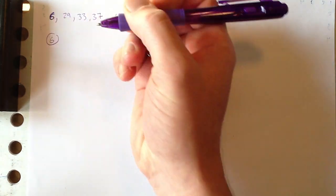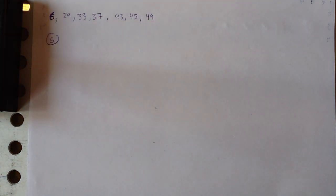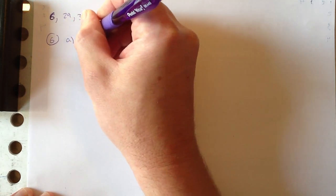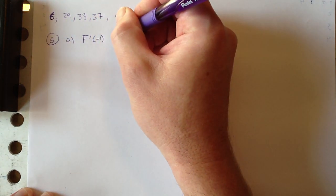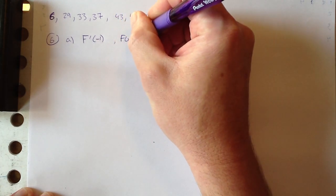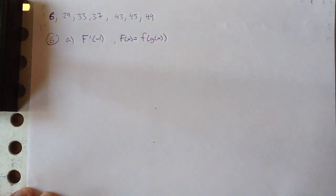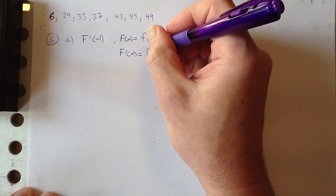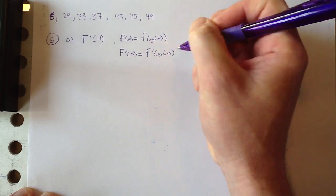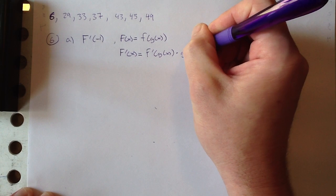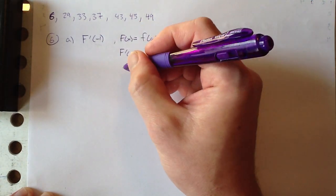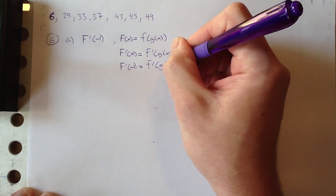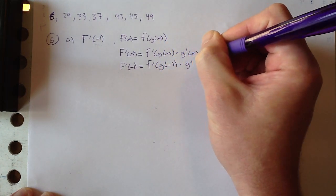Number 6 — I hope you're looking at your books; I'm not going to recopy the table here. Given the following table of values, find the indicated derivatives in parts A and B. In part A, they want to know what is F prime of negative 1, given that the capital F function equals f of g of x. By the chain rule, F prime of x equals the derivative of the outside function leaving the inside alone, times the derivative of what's inside. Evaluating at negative 1: F prime of negative 1 equals f prime of g of negative 1 times g prime of negative 1.